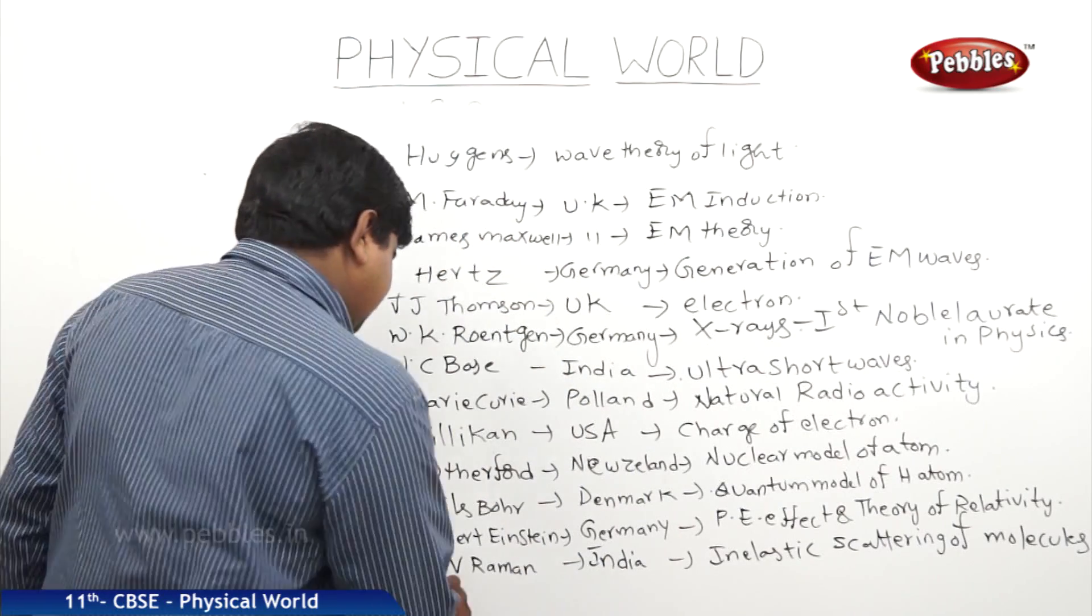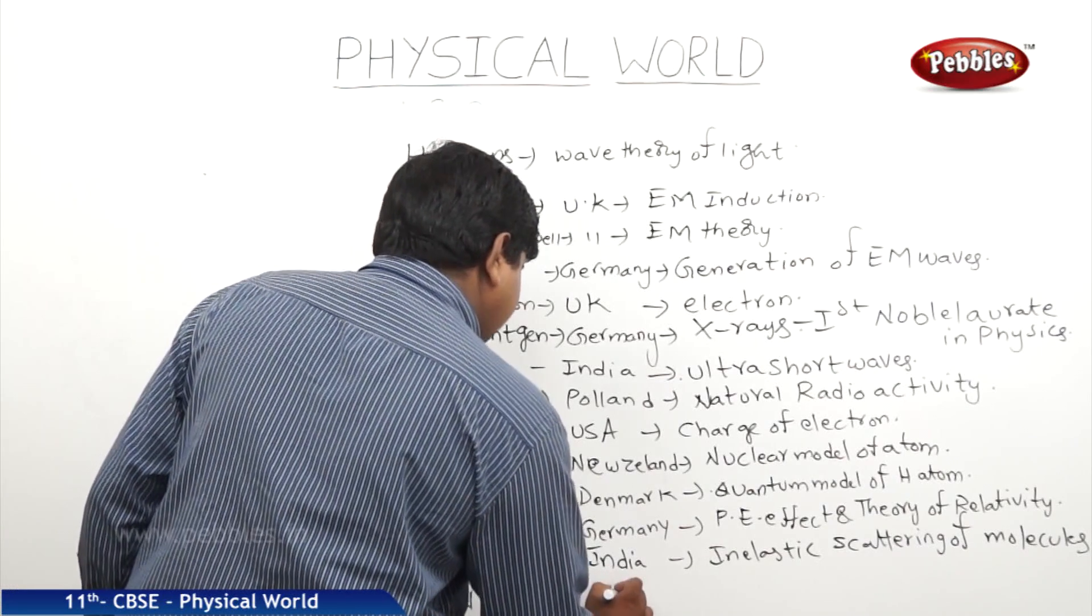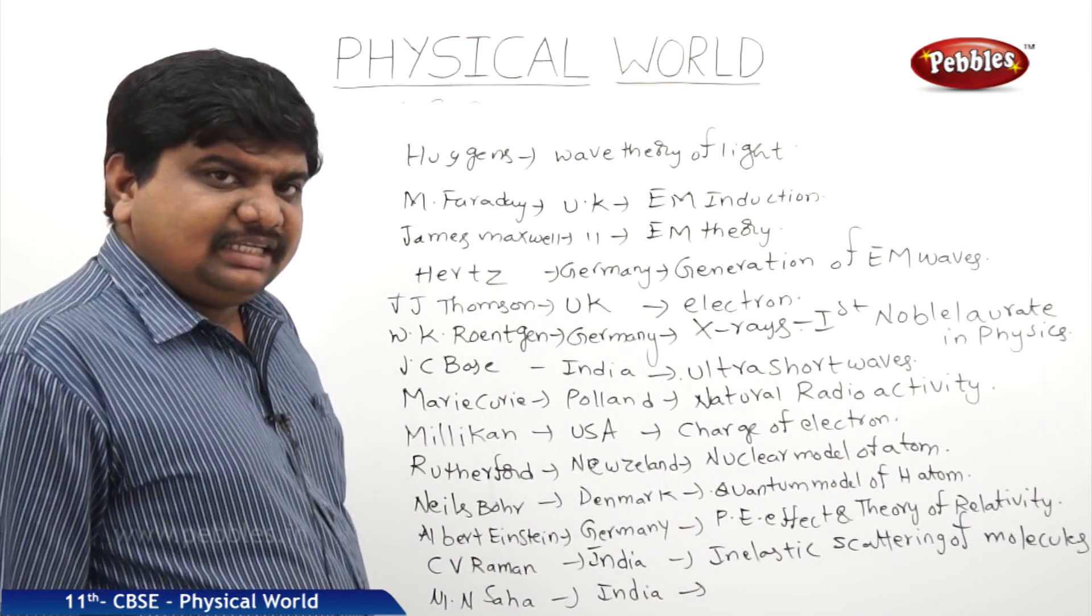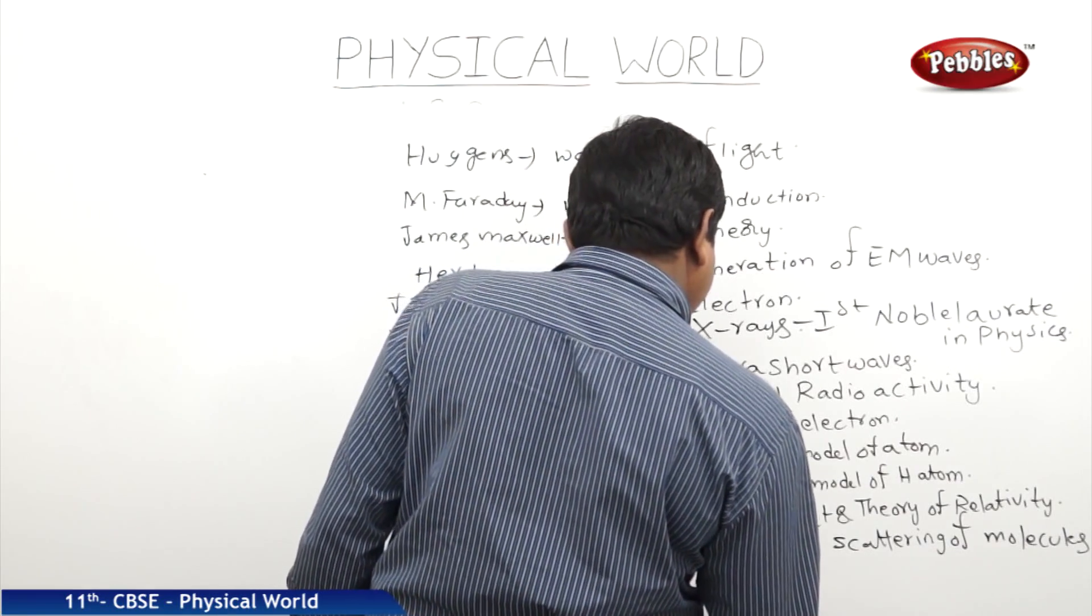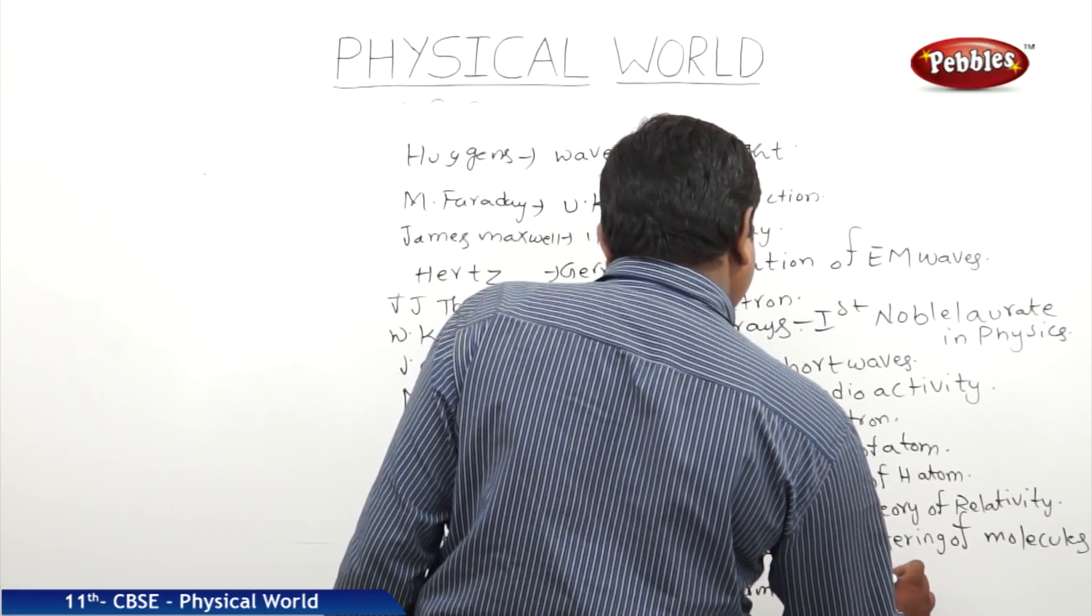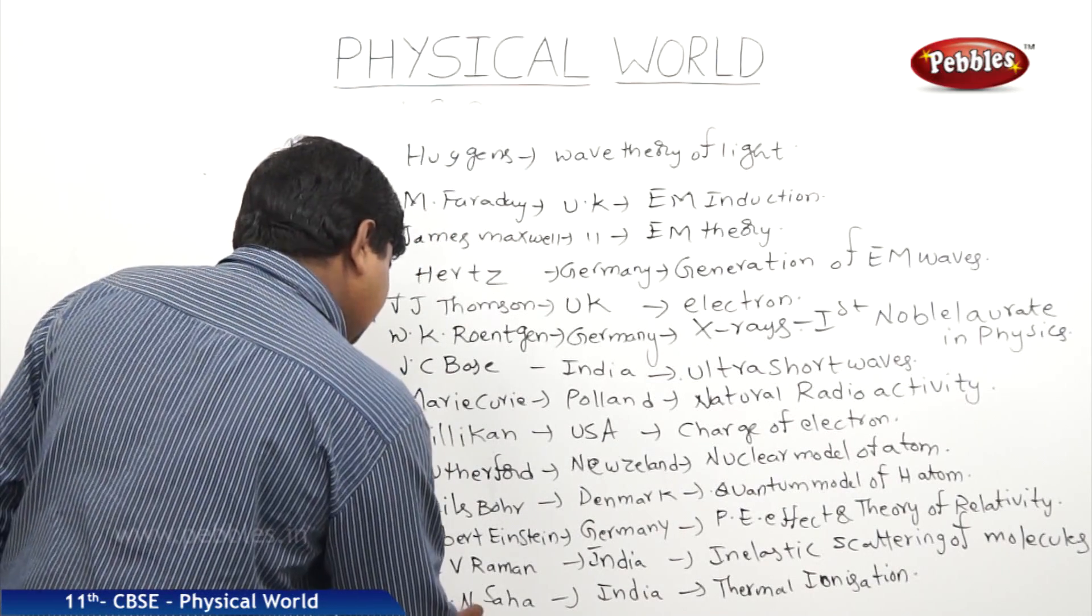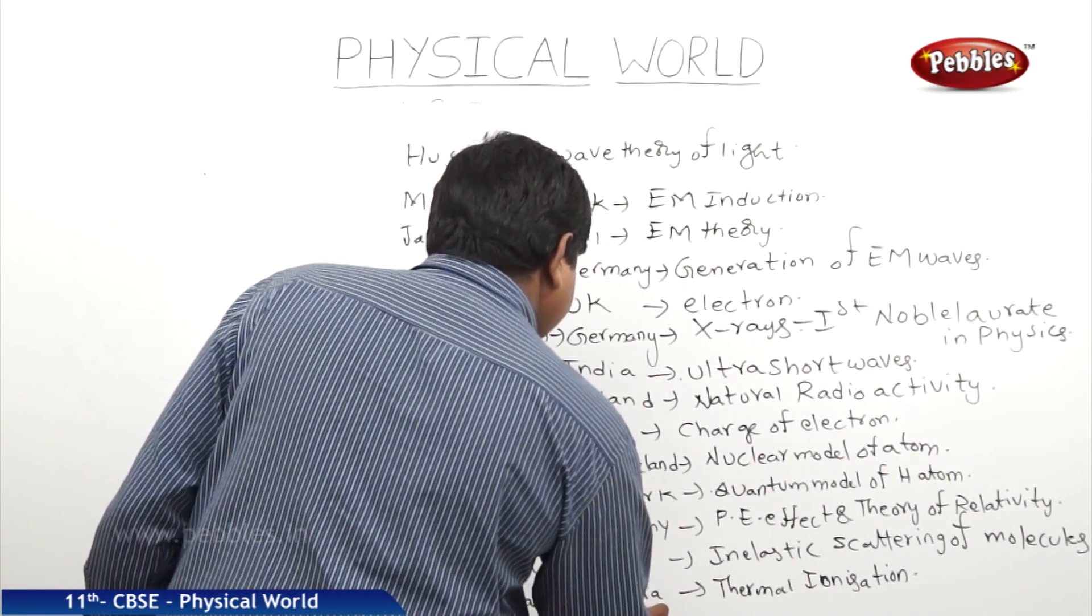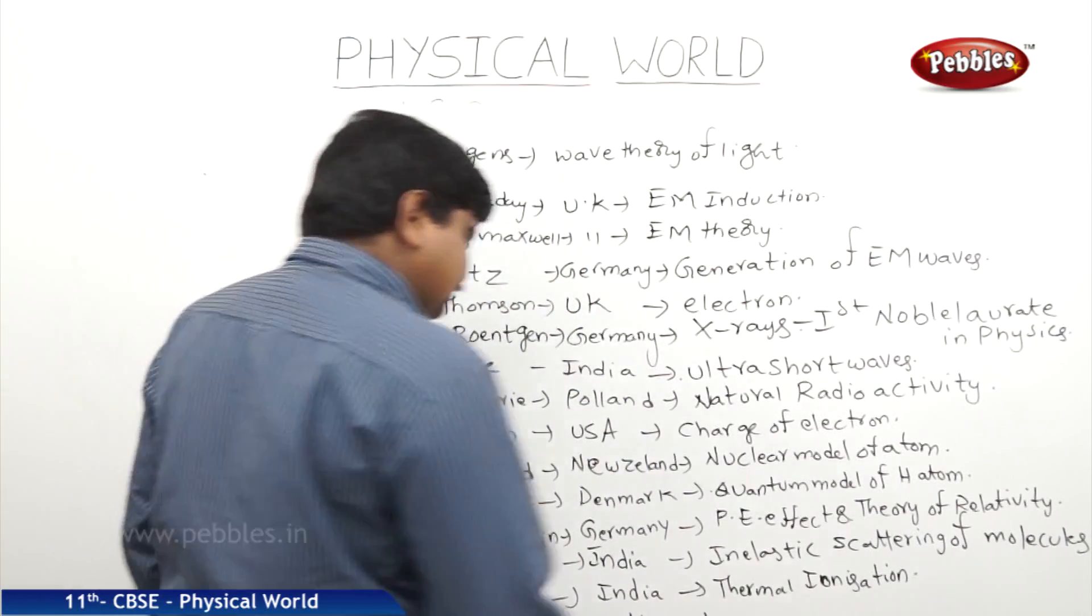Next one, Meghanand Saha, in short form we can say him as M.N. Saha from India. The next great scientist was S.N. Bose from India, has explained about the quantum statistics.